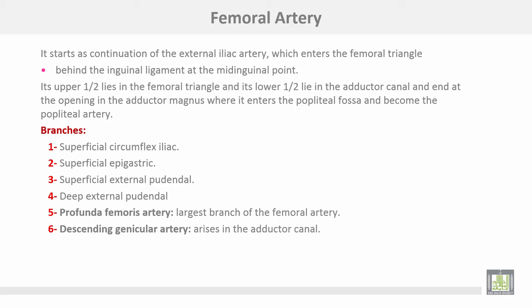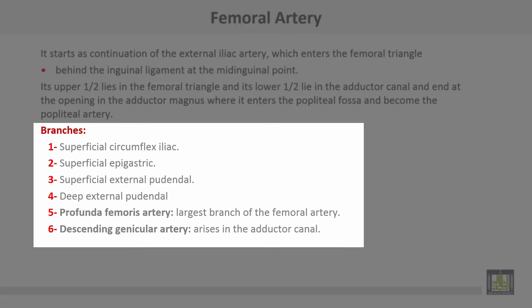The femoral artery starts as a continuation of the external iliac artery, which enters the femoral triangle behind the inguinal ligament at the mid-inguinal point. Its upper half lies in the femoral triangle, while the lower half lies in the adductor canal, then passes through the opening in adductor magnus to enter the popliteal fossa as the popliteal artery. Branches: superficial circumflex iliac, superficial epigastric, superficial external pudendal, deep external pudendal, and profunda femoris artery.